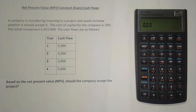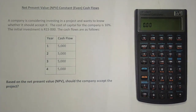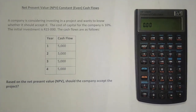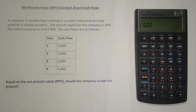Let's read the problem. A company is considering investing in a project and wants to know whether it should accept it. The cost of capital is 10%, the initial investment is 15,000 rand, and the cash flows from year one to year four are 5,000 rand — exactly the same for all years, which is what we mean by constant or even cash flows. Based on the net present value, should the company accept the project? We know that when NPV is positive we accept, when negative we reject.